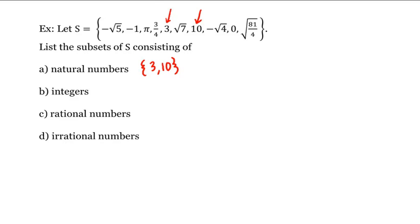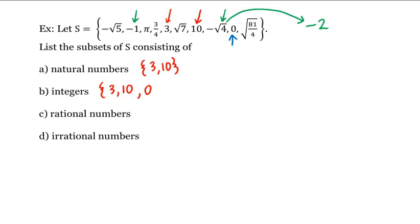Now the integers are the natural numbers together with 0 and the negative natural numbers. We do have 0 in our list, so let's add 0, as well as negative 1. But also we have negative square root of 4 — because of the square root we might have missed this, but the square root of 4 is just 2, so this is really just negative 2, which is an integer. So we'll add negative 1 and negative square root of 4 to our list.